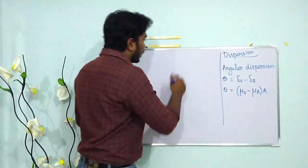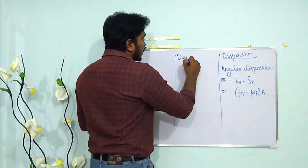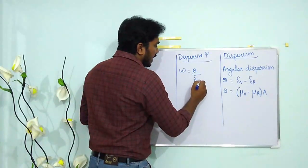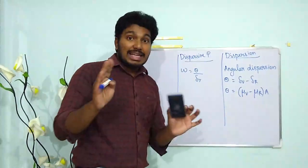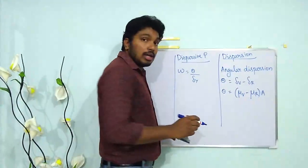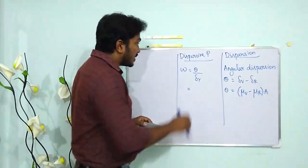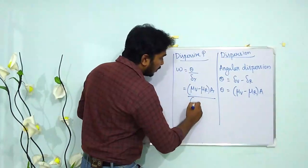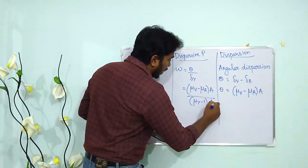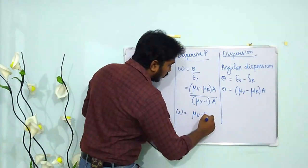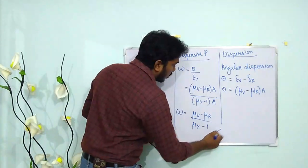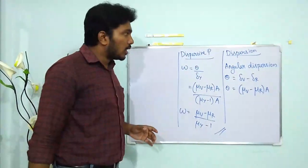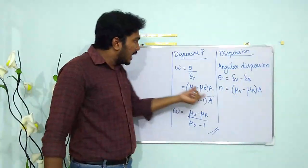The next term is dispersive power, represented by omega (ω), defined as ω = θ / δY, where δY is the mean deviation. Substituting, ω = (μV − μR) × A / [(μY − 1) × A], which simplifies to ω = (μV − μR) / (μY − 1). So we've defined dispersion, angular dispersion, and dispersive power.